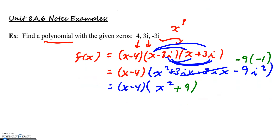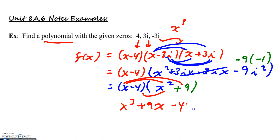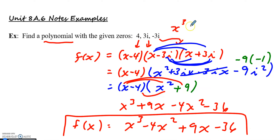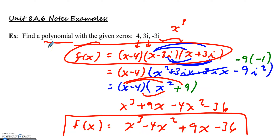If I want to keep multiplying this out even more, I can distribute again to get x cubed plus 9x minus 4x squared minus 36. Putting this in standard form, my answer would be x cubed minus 4x squared plus 9x minus 36. If you actually multiply it out, it did work — it is a cubic function. If you wanted to leave it in terms of linear factors, that would also be your answer.